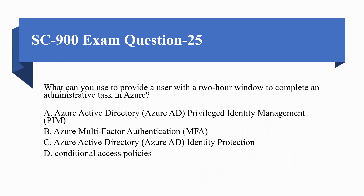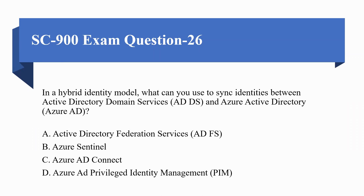Next question: What can you use to provide a user with a two-hour window to complete an administrative task? Options are: A) Azure Active Directory Privileged Identity Management, B) Azure MFA, C) Azure Active Directory Identity Protection, D) Conditional Access Policy. The correct option is Conditional Access Policies.